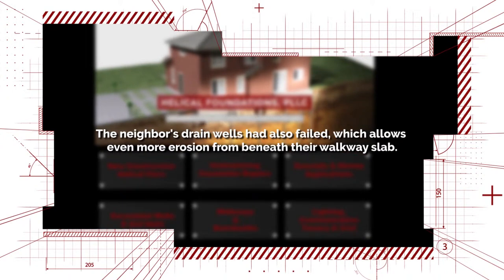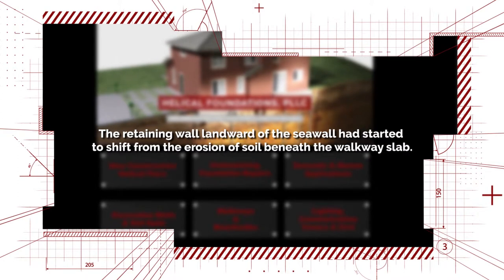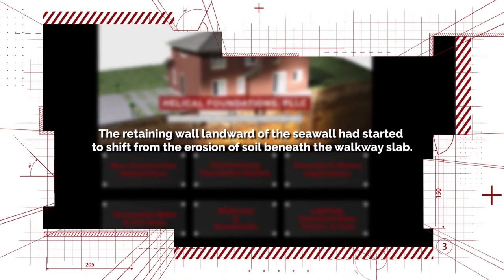The neighbor's drain wells had also failed, which allows even more erosion from beneath their walkway slab. The retaining wall landward of the seawall had started to shift from the erosion of soil beneath the walkway slab.